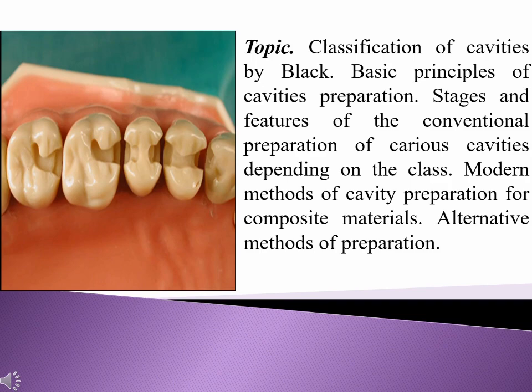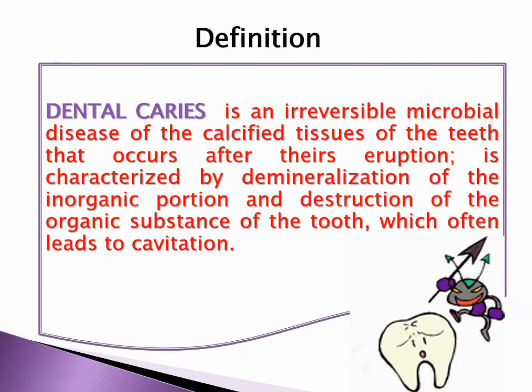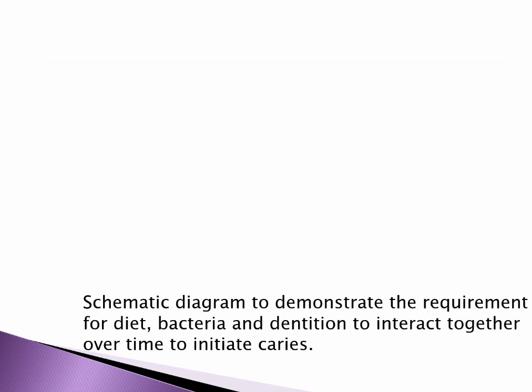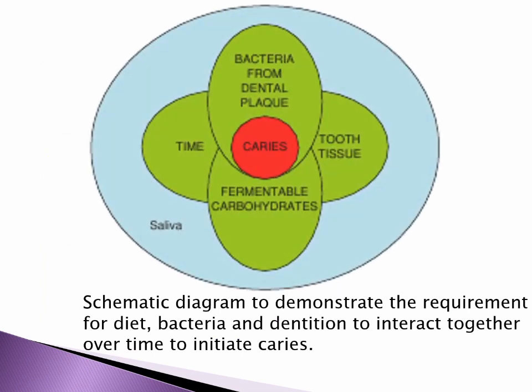Definition: Dental caries is an irreversible microbial disease of the calcified tissues of the teeth that occurs after their eruption. It is characterized by demineralization of the inorganic portion and destruction of the organic substance of the tooth, which often leads to cavitation. A schematic diagram demonstrates the requirement for diet, bacteria, and dentition to interact together over time to initiate caries.